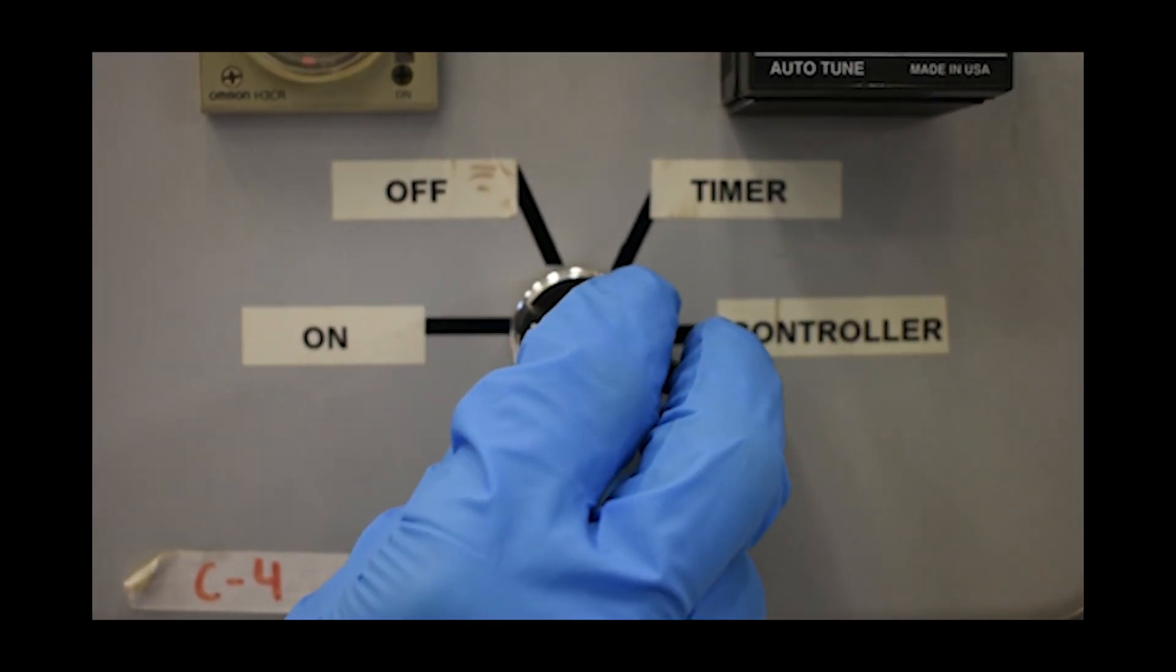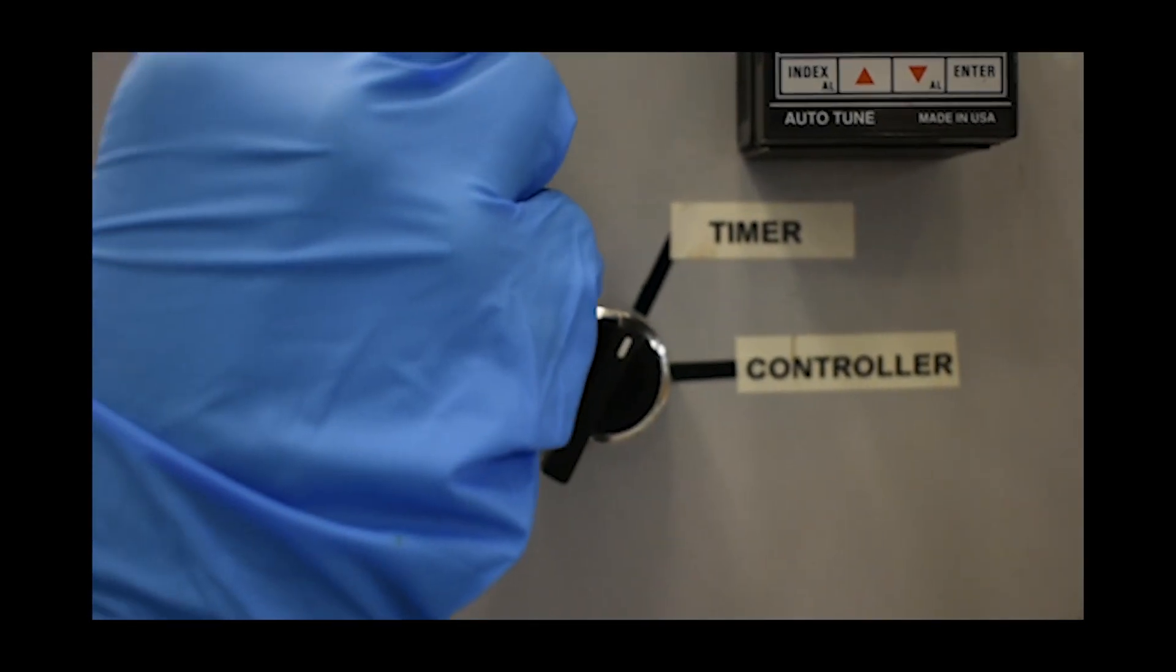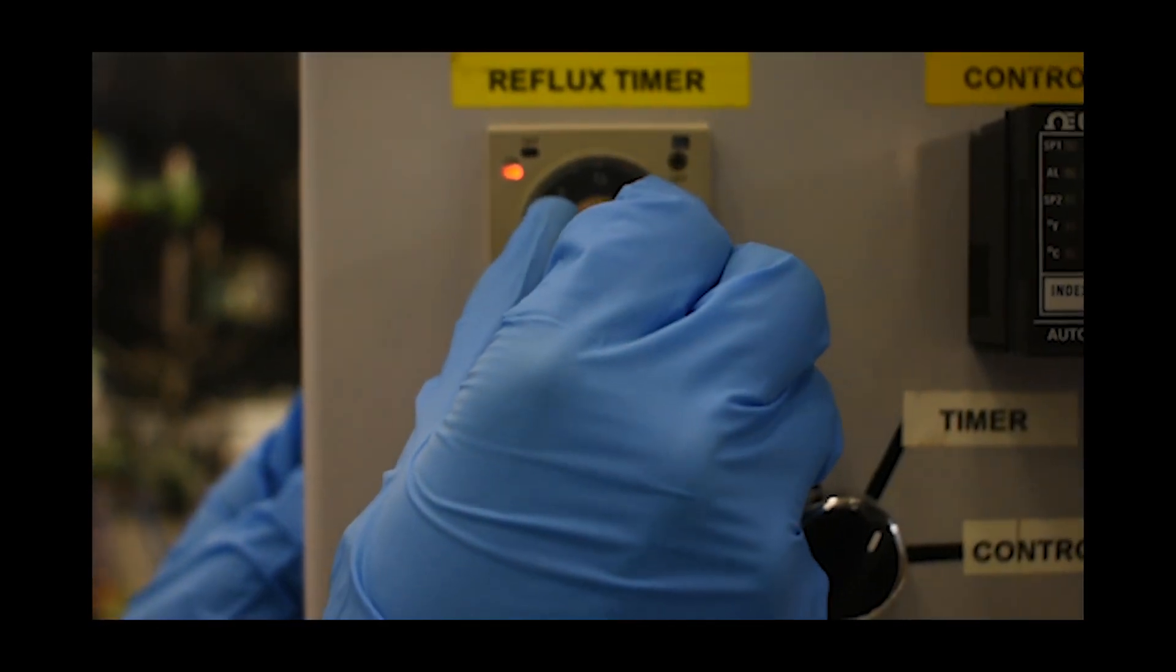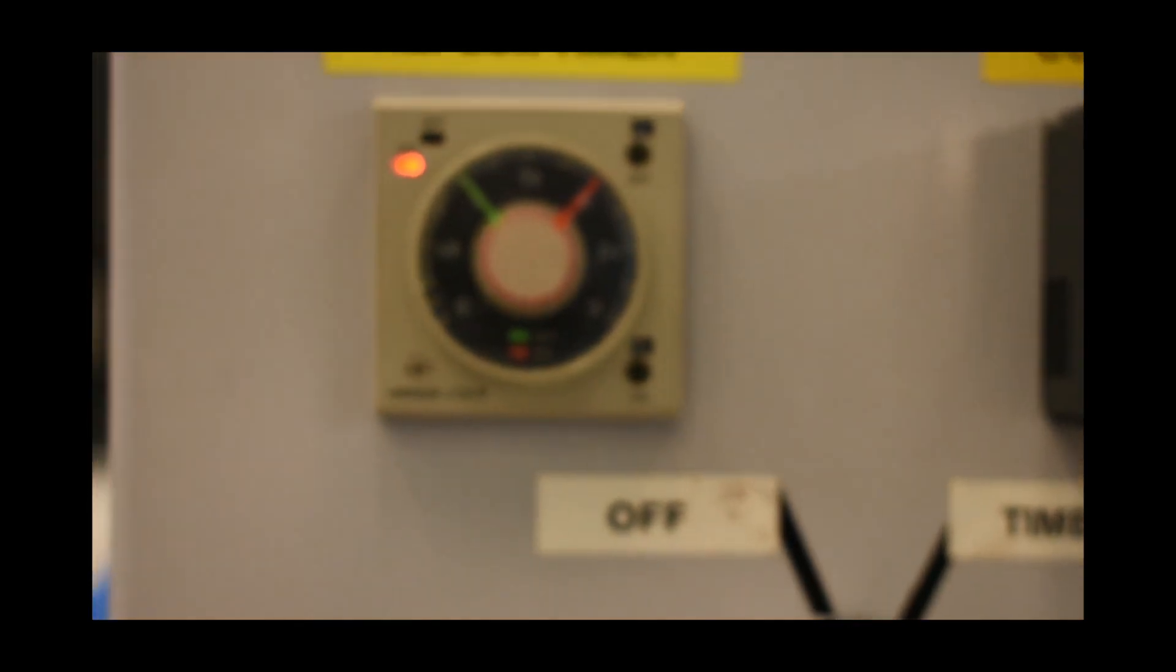When condensation begins, set the system to the desired reflux ratio. To do this, set the control panel to timer using the dial on C4 and change the on-off ratio on the reflux timer to your desired reflux ratio.